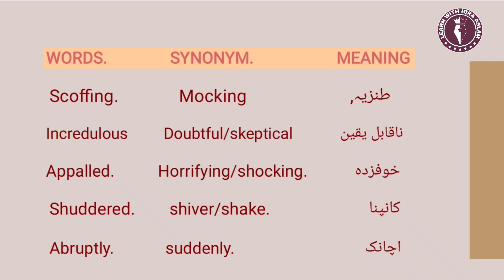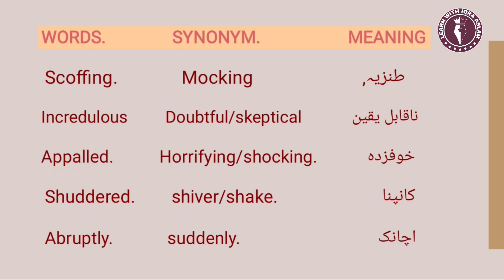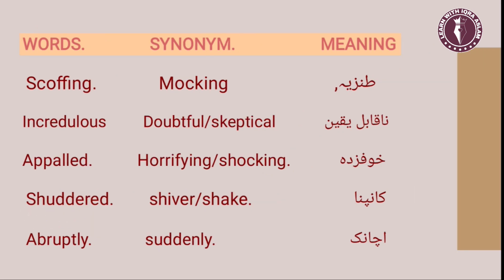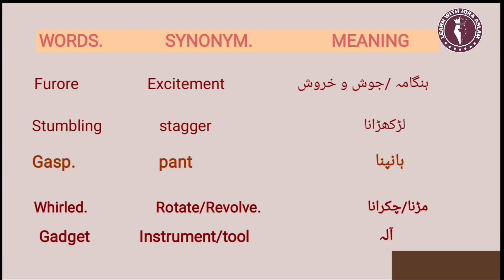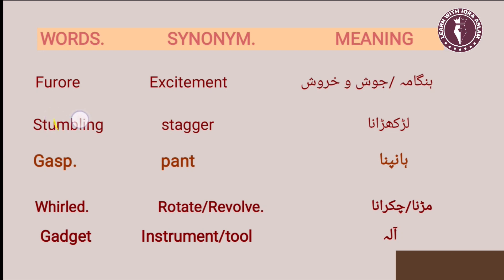Next word is 'incredulous,' jiska matlab hai nakabil-e-yaqeen. Aur iska synonym hai 'doubtful' ya 'skeptical.' Agla word hai 'appalled.' Appalled ka matlab hai khauf-zada hona ya dare hue hona. Aur iska synonym hai 'horrifying' ya 'shocking.' Next: 'shuddered,' jiska matlab hai kaampna. Aur iska synonym hai 'shiver' ya 'shake.' Then 'abruptly' — achanak — iska synonym hai 'suddenly.' 'Funerary' kehte hain hangama ya josh-o-kharosh, aur iska synonym hai 'excitement.' Next is 'stumbling' — yaani ladkhadana — aur iska synonym hai 'stagger.'